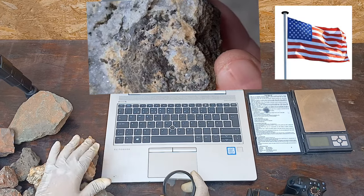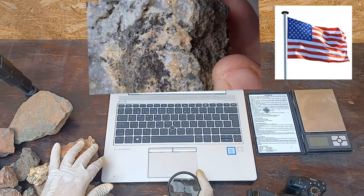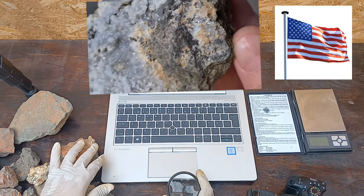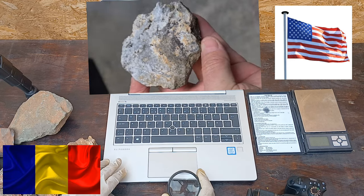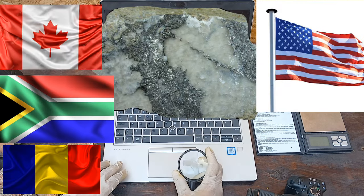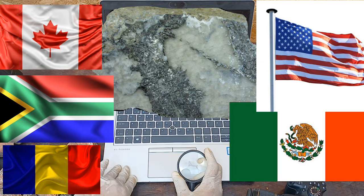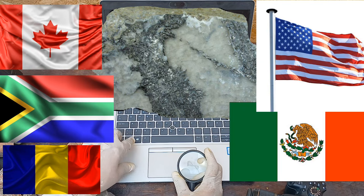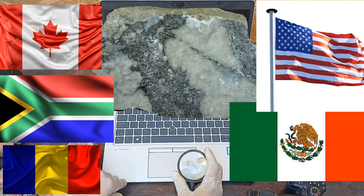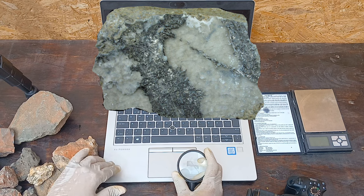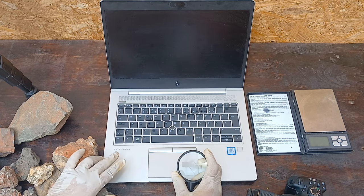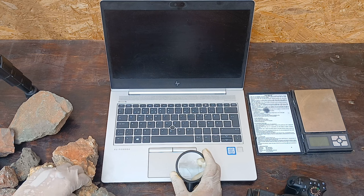Silvanite can be found in other places around the world, including Romania, Canada, South Africa, and Mexico. It is usually found in hydrothermal veins associated with gold and silver deposits.